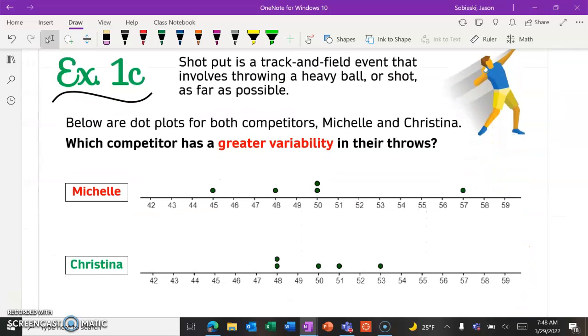So part 1c just wants us to look at which competitor has a greater variability, meaning spread out. This is just a chance for you if you need to review quickly how to find IQR.